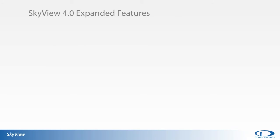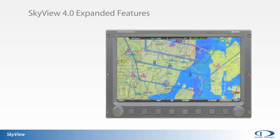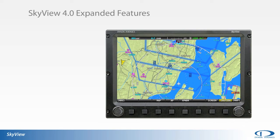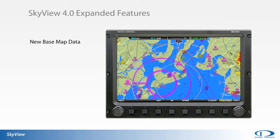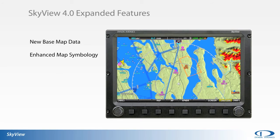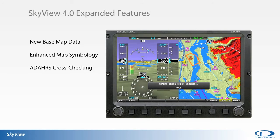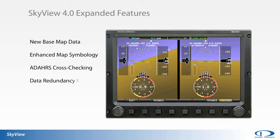The expanded features included with SkyView version 4.0 firmware include a new base map featuring city names, roads, railroads and rivers, enhanced moving map symbology, ADHARS cross-checking of multiple ADHARS systems, redundant data and power monitoring, as well as Rotex 912IS engine monitoring support.